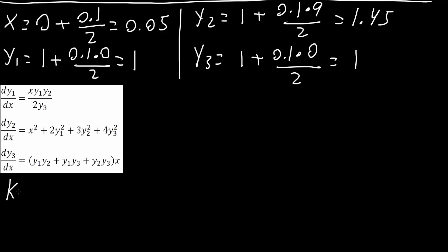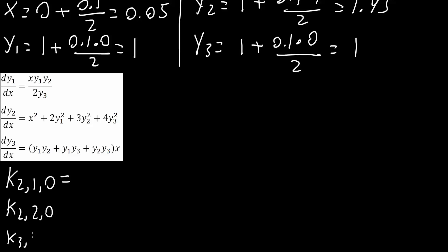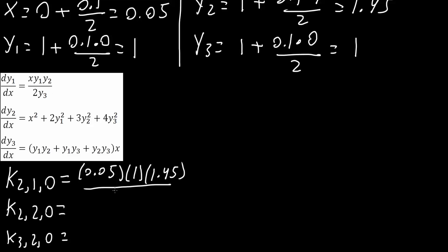Next we do k2,1,0 — the second k, first equation, initial x was 0. The value of x is now 0.05, times y1 which is 1, times y2 which is 1.45, divided by 2 times y3 which is 1, giving 0.0363.